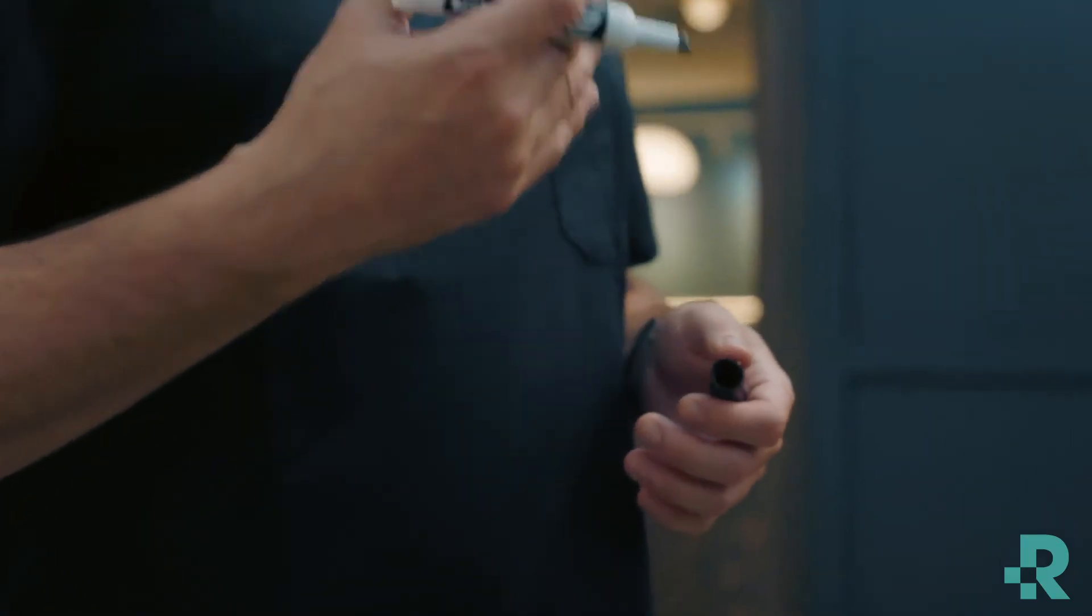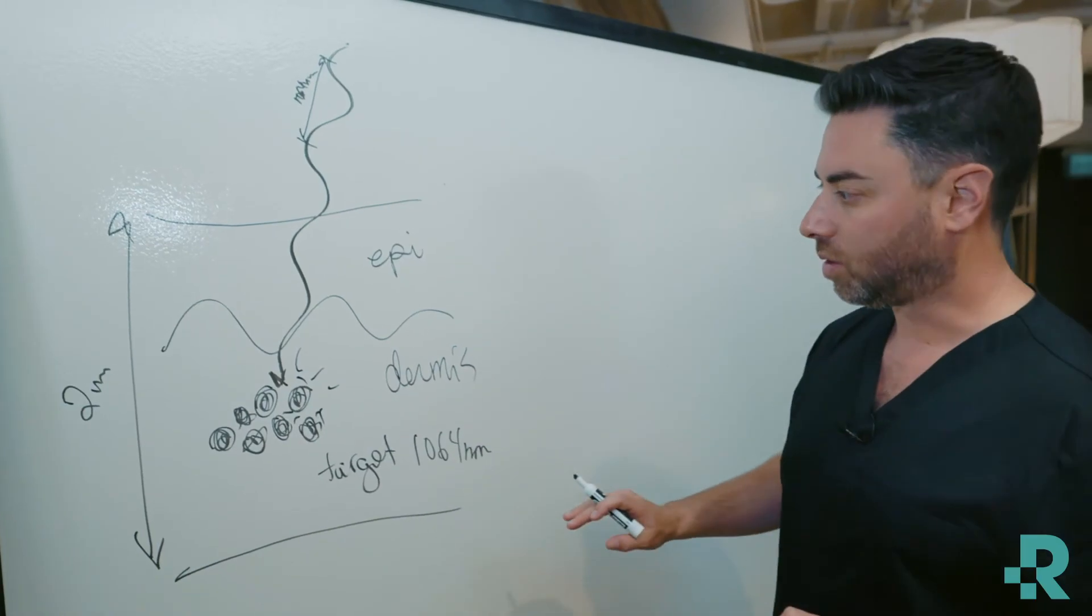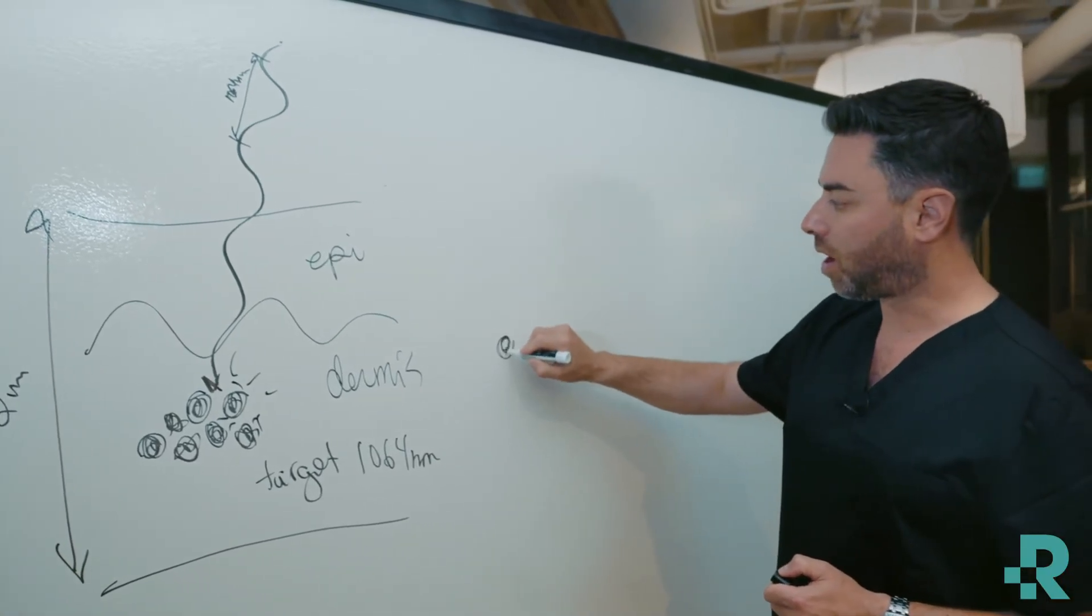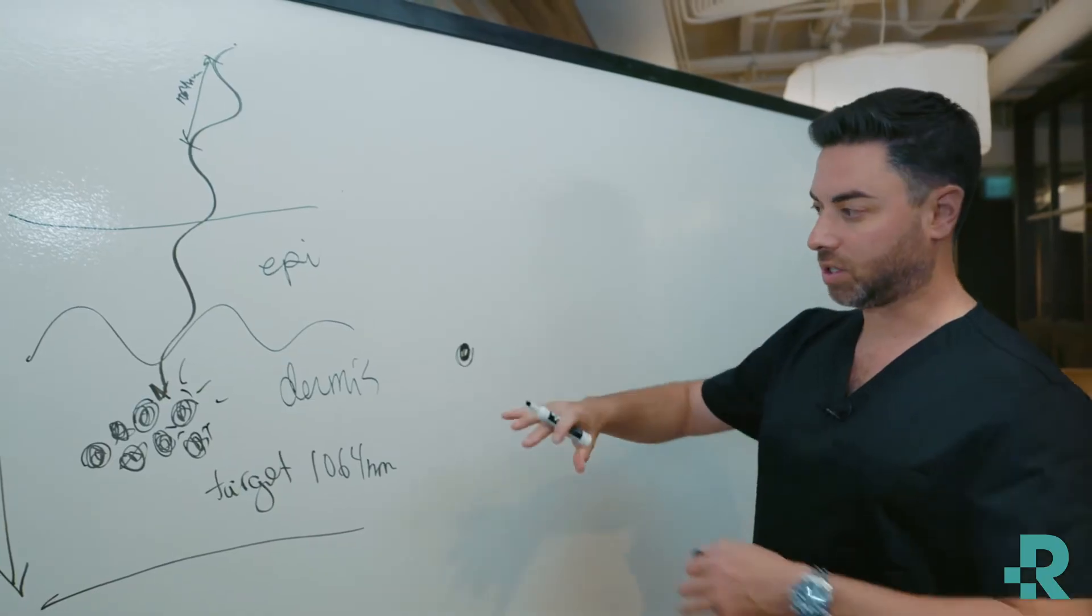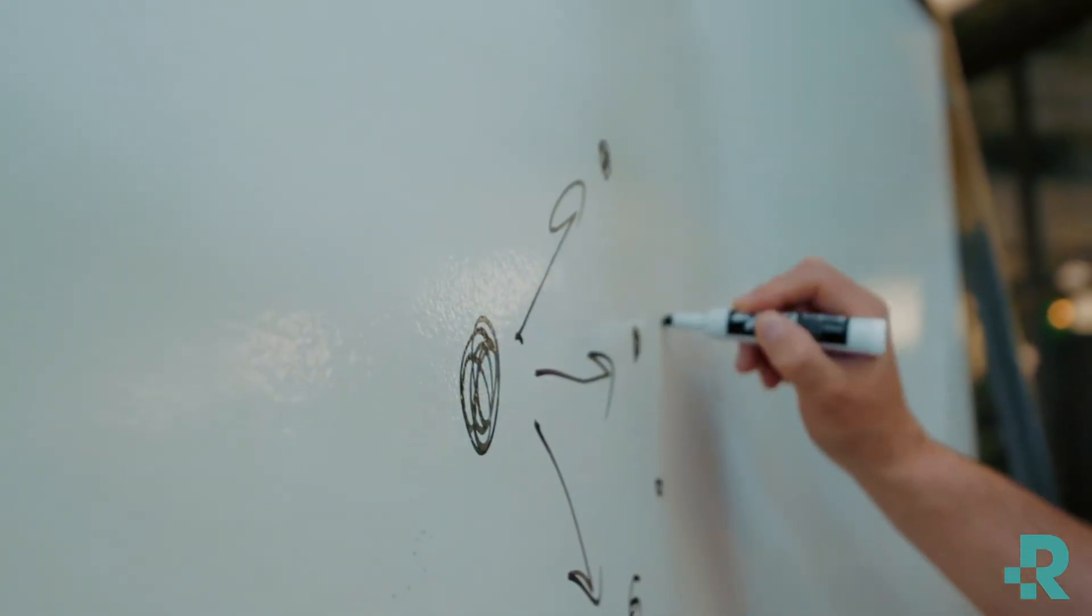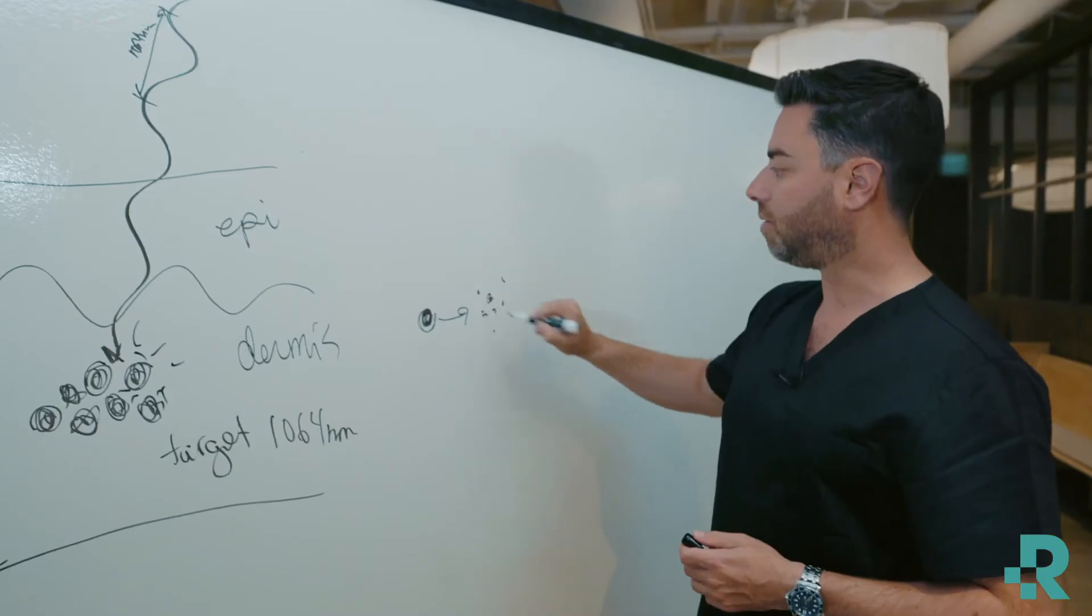So now we've had our energy enter into the ink molecule. We need to see what's going to happen. So that single particle of ink, which there are millions upon millions of, becomes lots of much smaller particles of varying sizes.